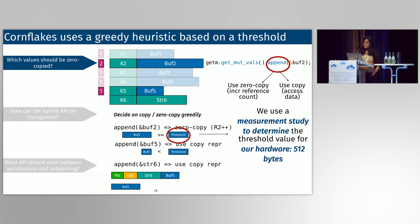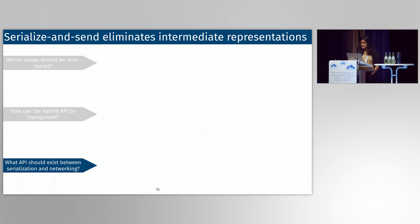We use a measurement study to determine the value of this threshold on a per-hardware basis. For the hardware we evaluated on, we found that 512 bytes was the optimal value for this threshold. The paper contains more details on the intuition behind this value, as well as how we expect it could change on different hardware platforms.